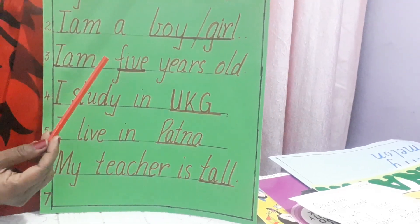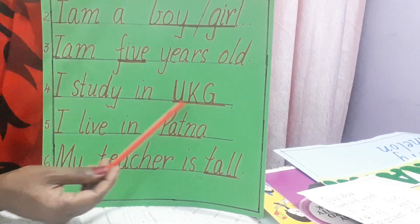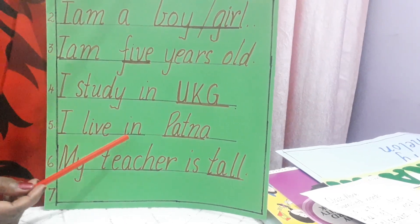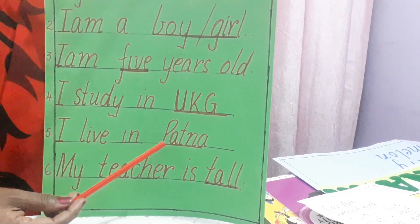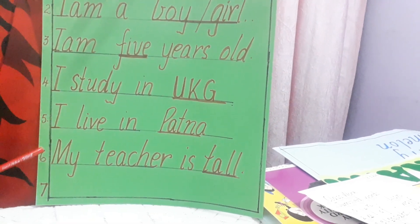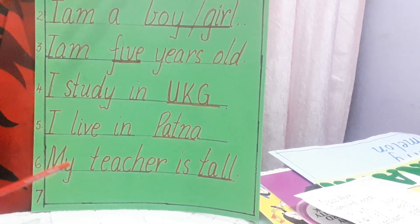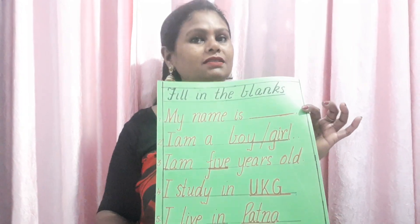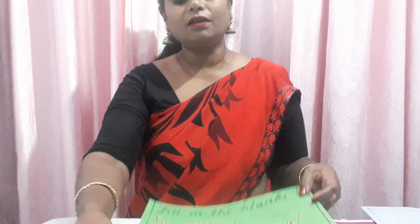Next one, I am dash years old — you will have to write five. Number four, I study in dash — U.K.G. Number five, I live in Patna. Make sure you write Patna with a capital P, begin with a capital P. Next one, my teacher is tall. Students, this is the fill in the blanks. You have got to learn it orally and when you are thorough with it, you can do it in your copy.